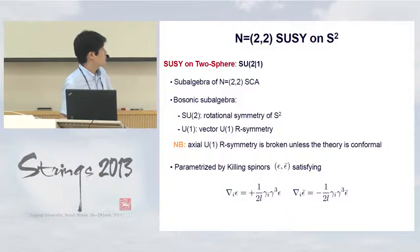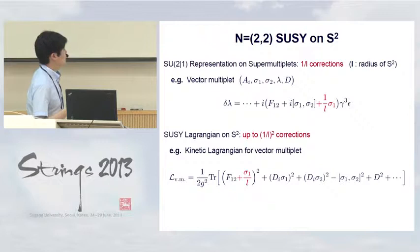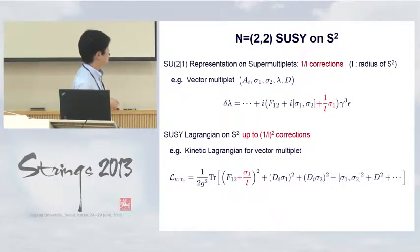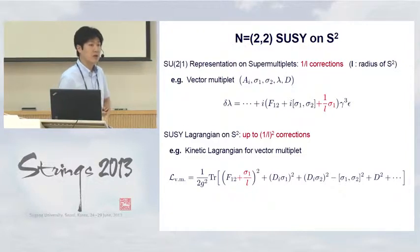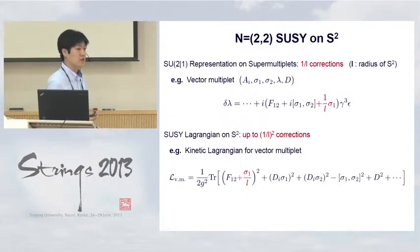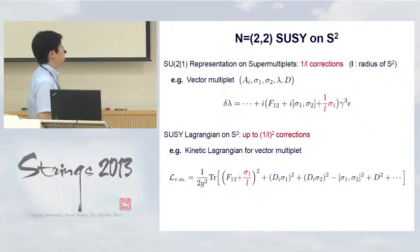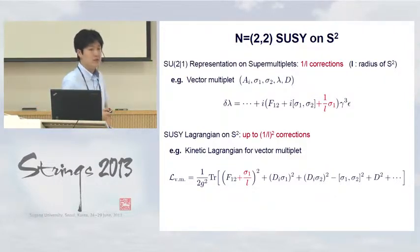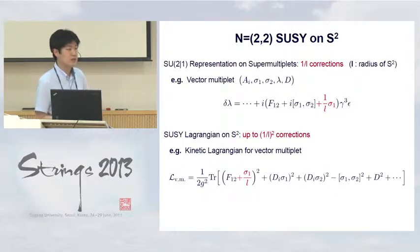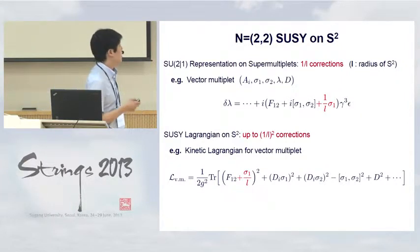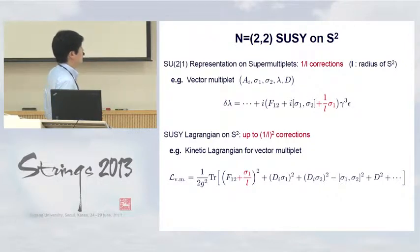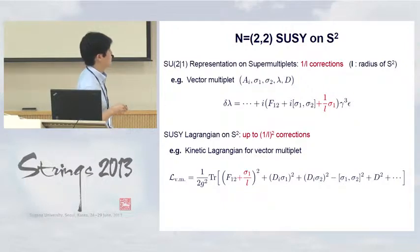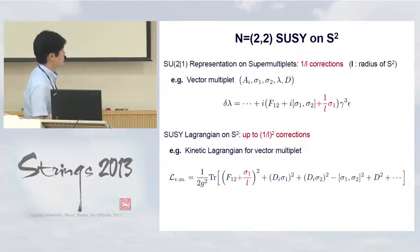Once we identify the supersymmetry algebra on the two-sphere, we need to find the SU(2|1) representations on the supermultiplets and construct the supersymmetric Lagrangians. In general, when we couple a quantum field theory to a curved background such as the two-sphere, there are ambiguities in adding correction terms suppressed by 1/L, where L is the radius. By demanding SU(2|1) supersymmetry, one can systematically determine such correction terms using off-shell supergravity formalisms or an iterative method. One can show there are 1/L corrections in the transformation rules and 1/L² corrections in the Lagrangians.